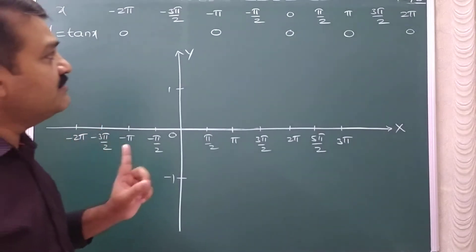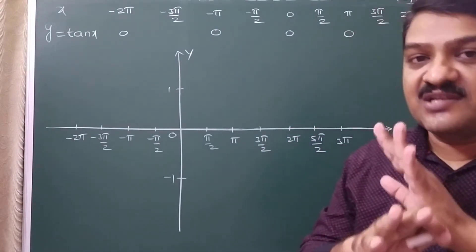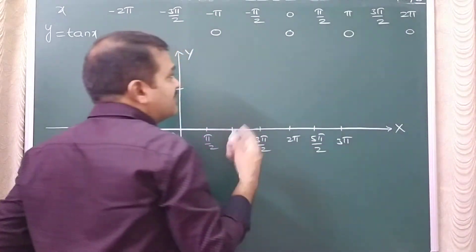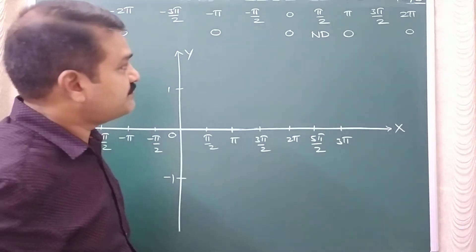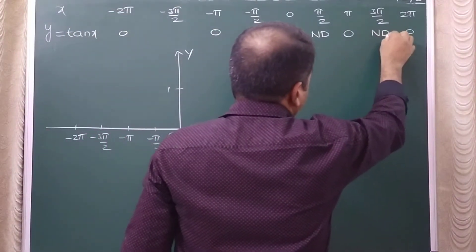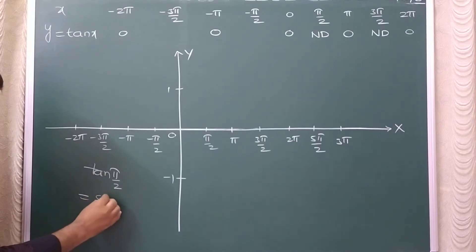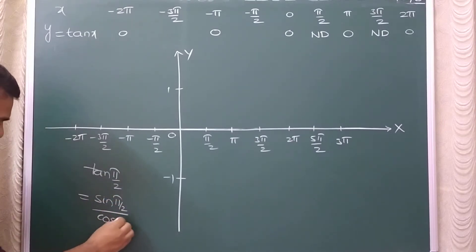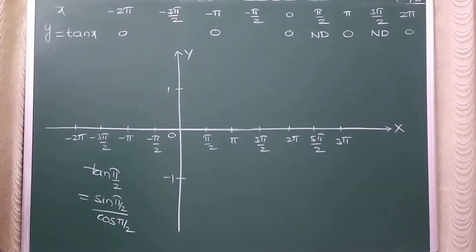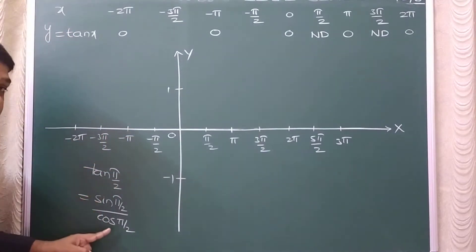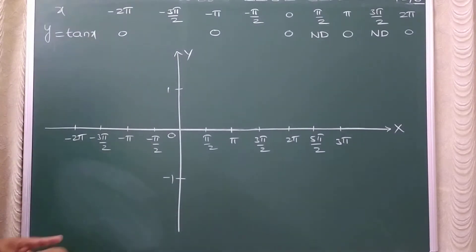For all odd multiples of pi by 2, the tan function is not defined. For example, tan pi by 2 is not defined - I am writing Nd, which means not defined. The reason is simple: tan pi by 2 can be written as sin pi by 2 divided by cos pi by 2, and cos pi by 2 is 0, so the denominator is 0 and therefore it is not defined. So for all odd multiples of pi by 2, cos function is 0 and therefore tan function is not defined.